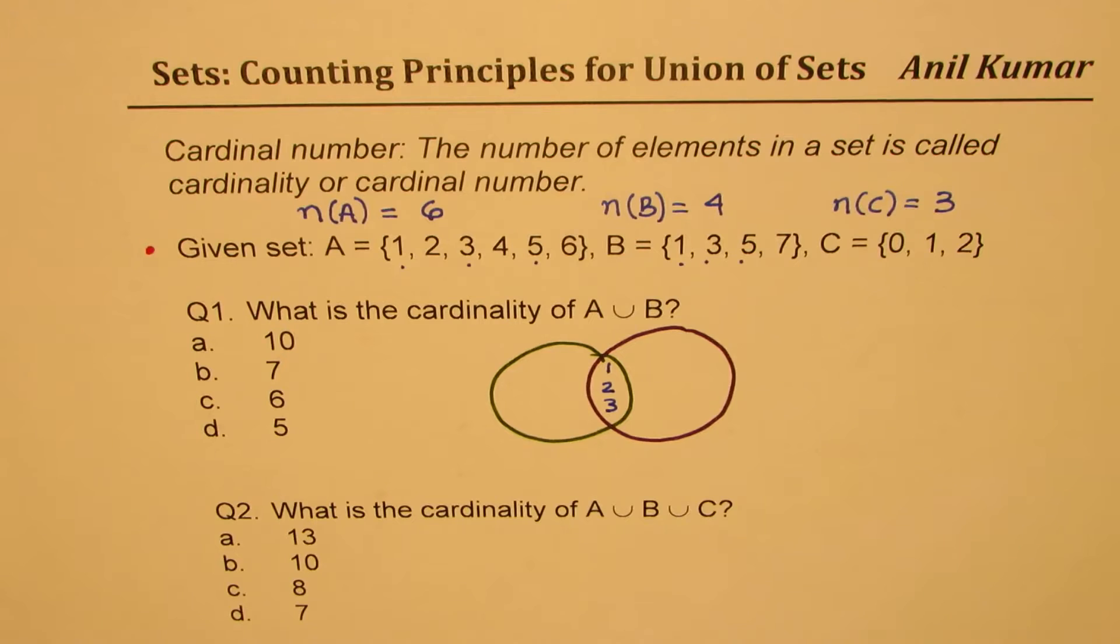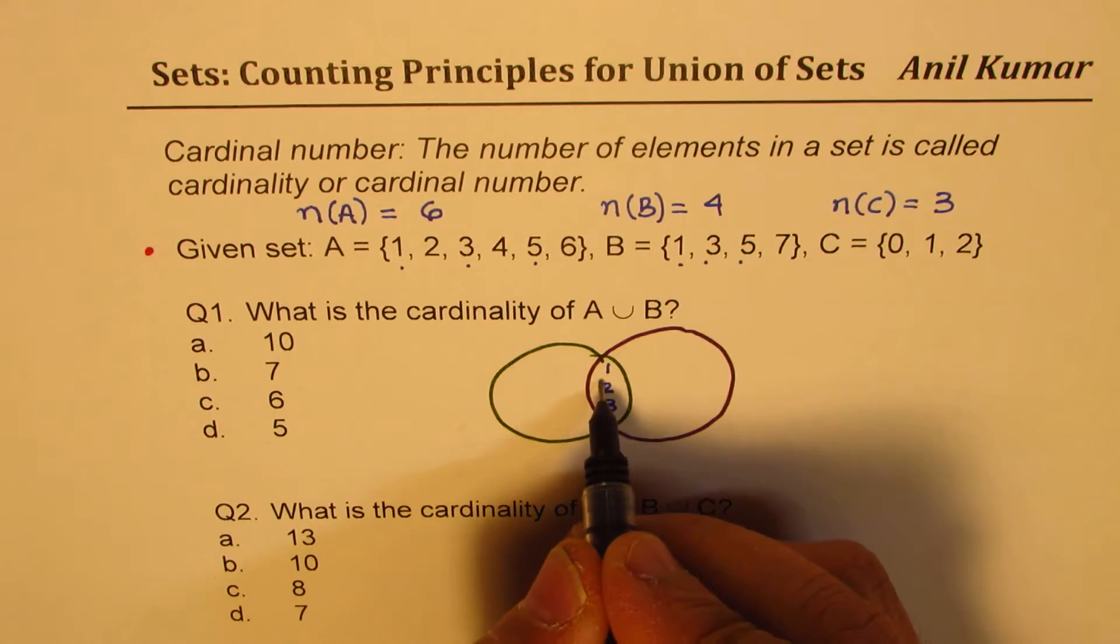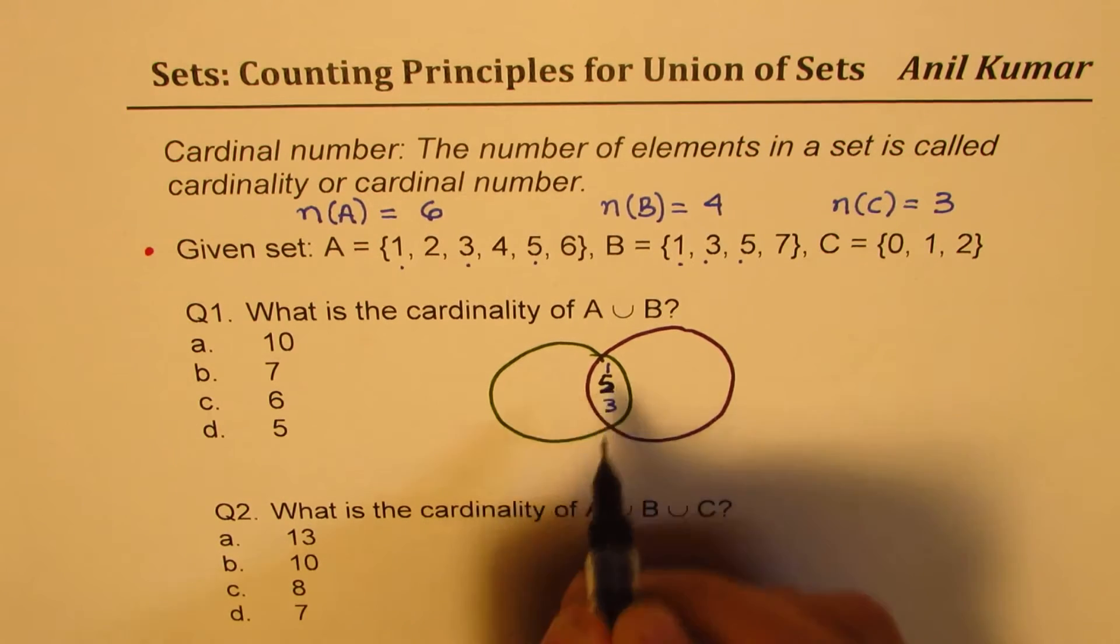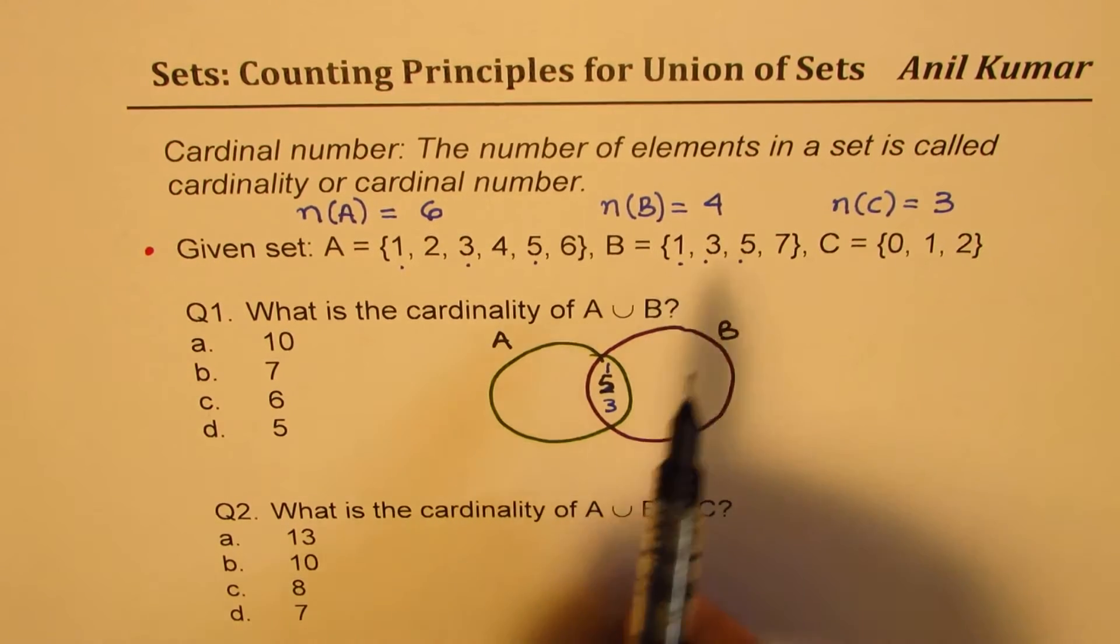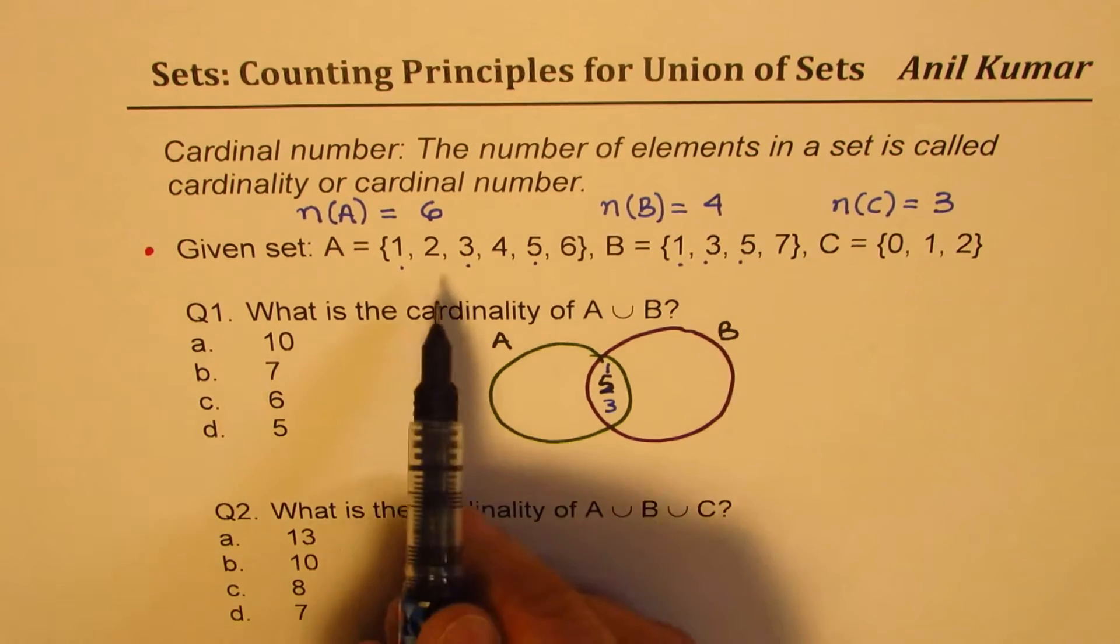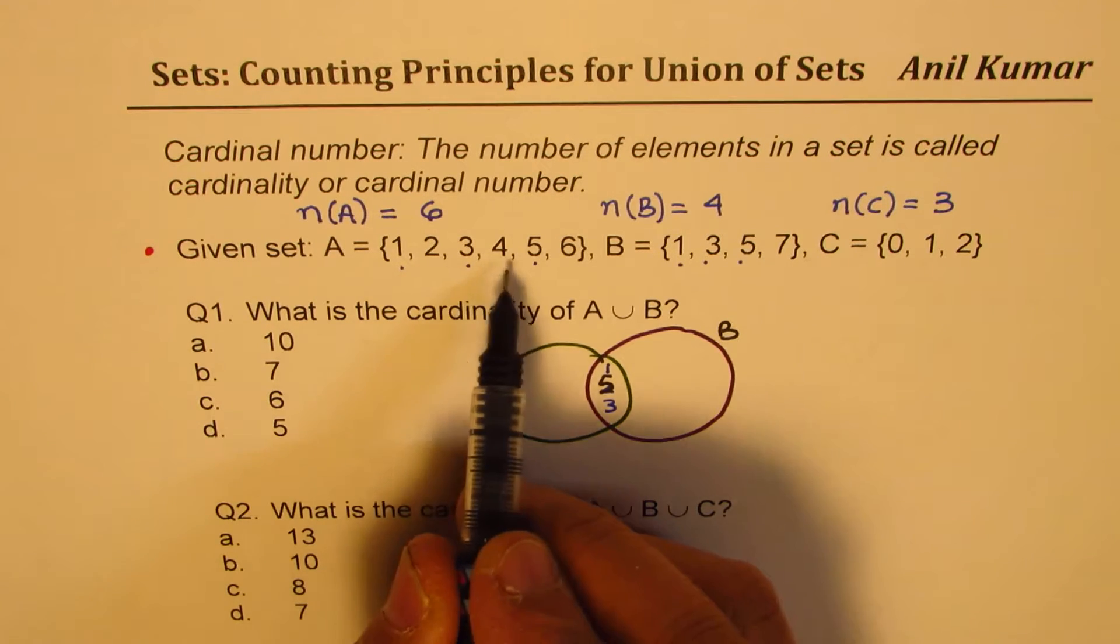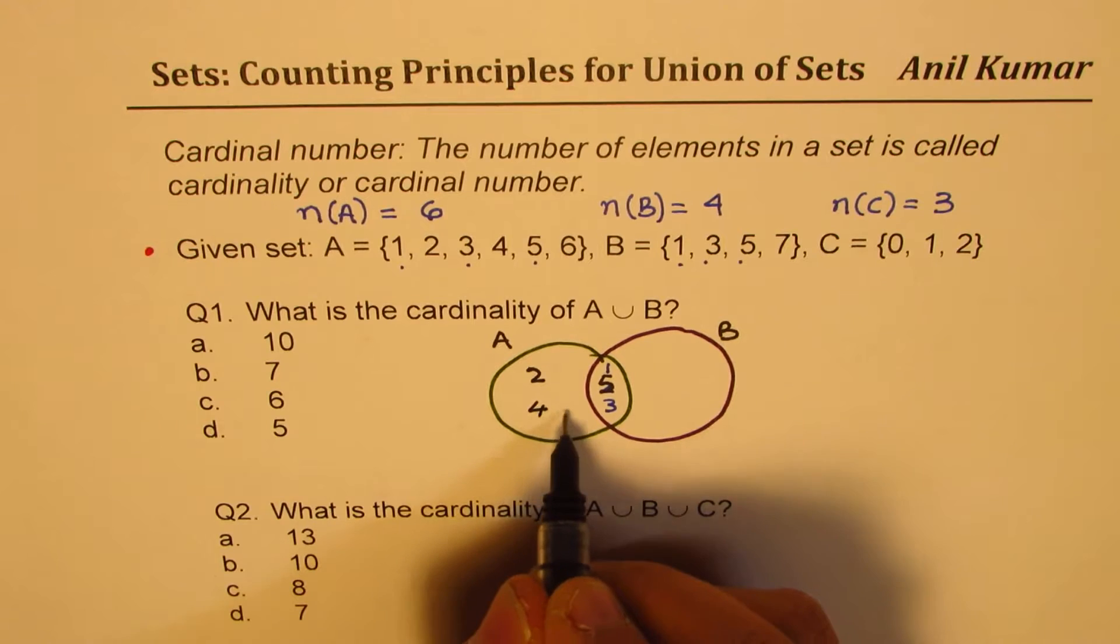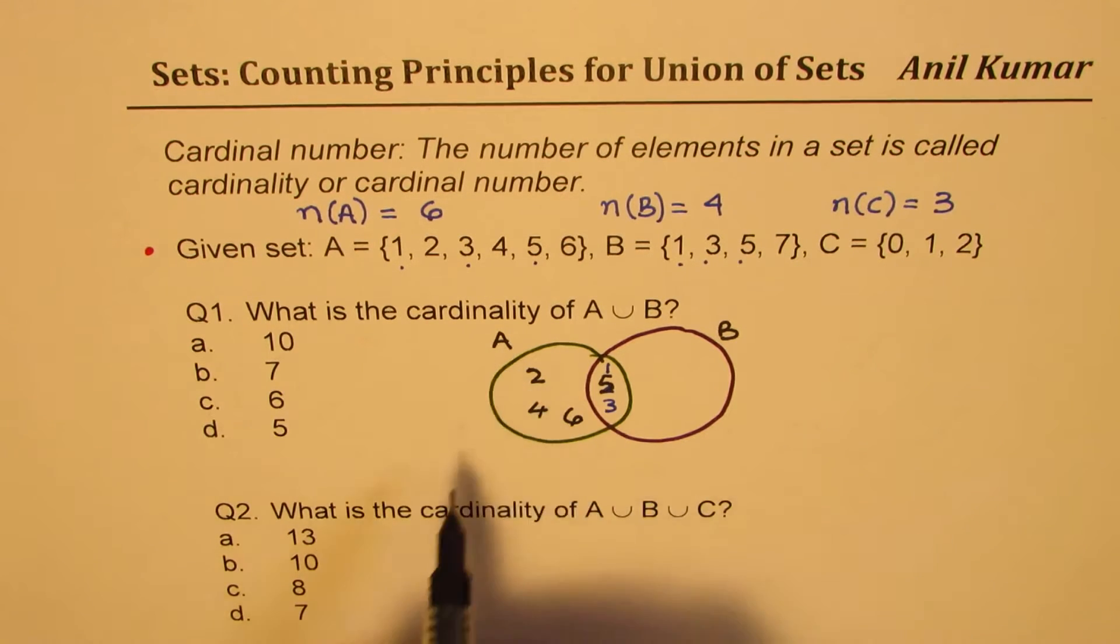Now, in set A, apart from 1, 3, and 5, this should have been 5, okay. Let this be set A and this be B. So, apart from 1, 3, and 5, in set A, we have 2, 4, and 6 also. So, I'll write 2, 4, and 6. So, that makes all the 6 elements of A, which is 1, 2, 3, 4, 5, and 6.